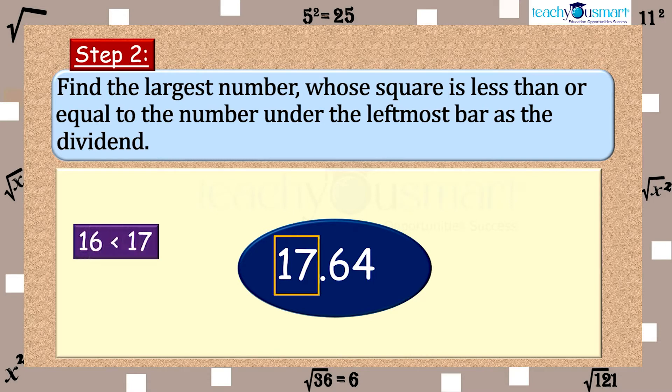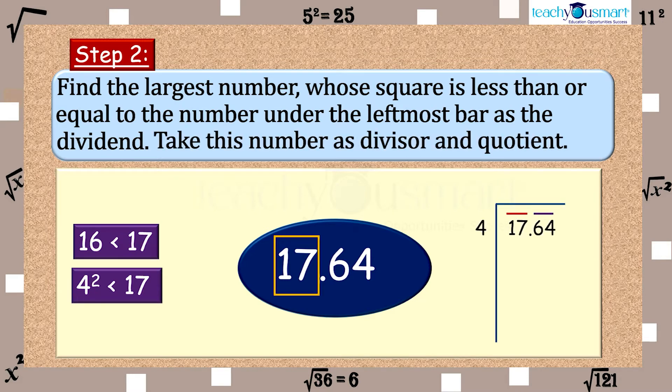Here, 16 is the largest square number less than 17. That is 4 is the largest number whose square is less than 17. Here 4 is the divisor and the quotient. Divide and get the remainder. We get 1 as the remainder.